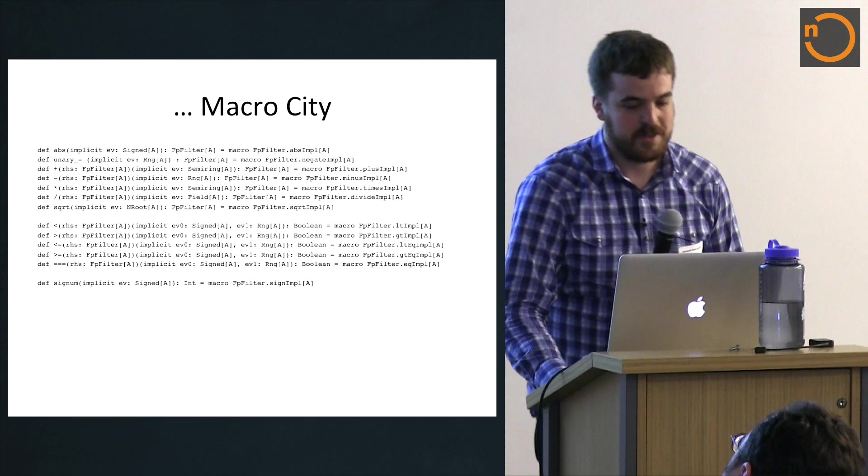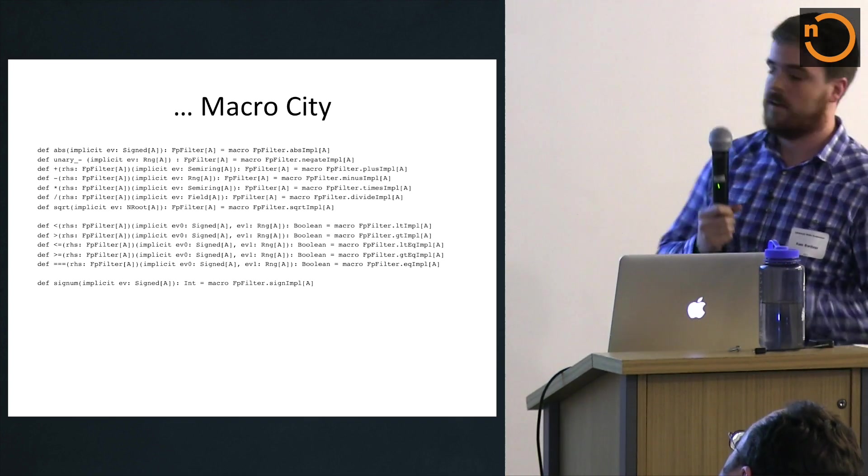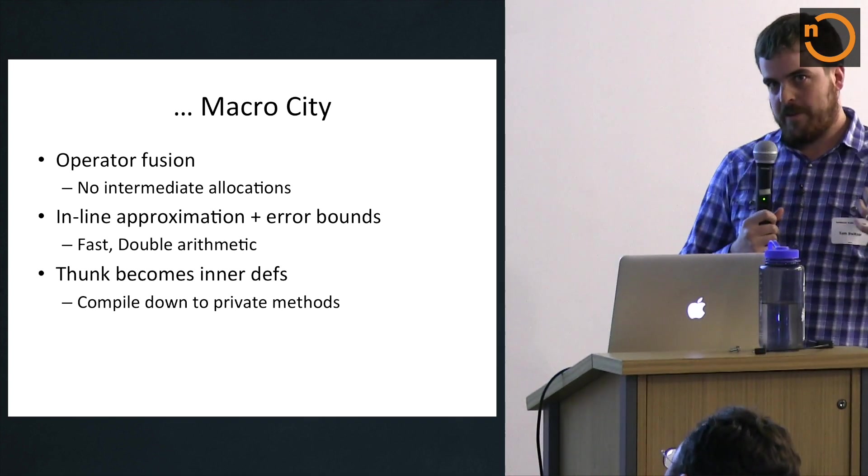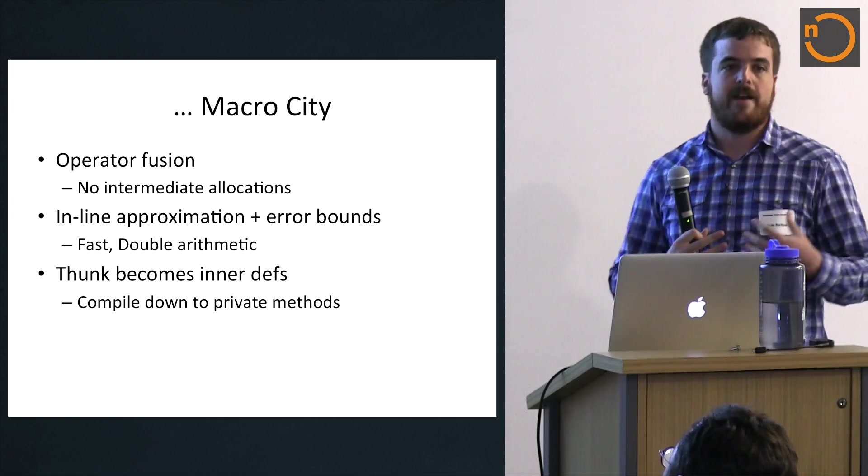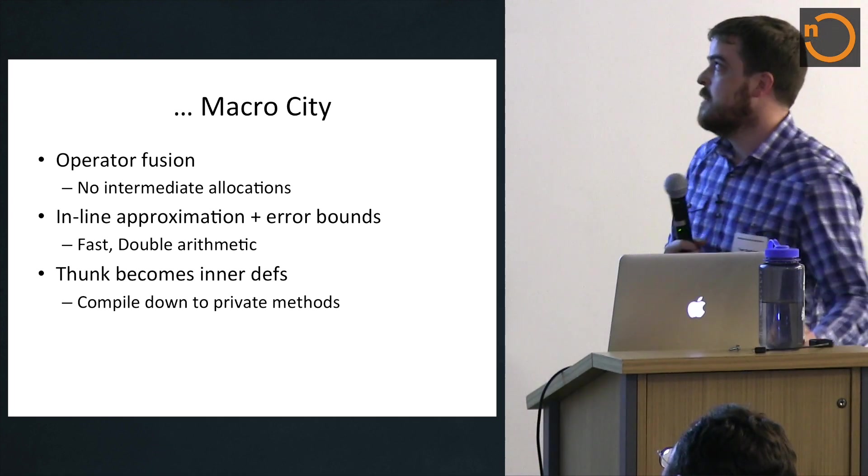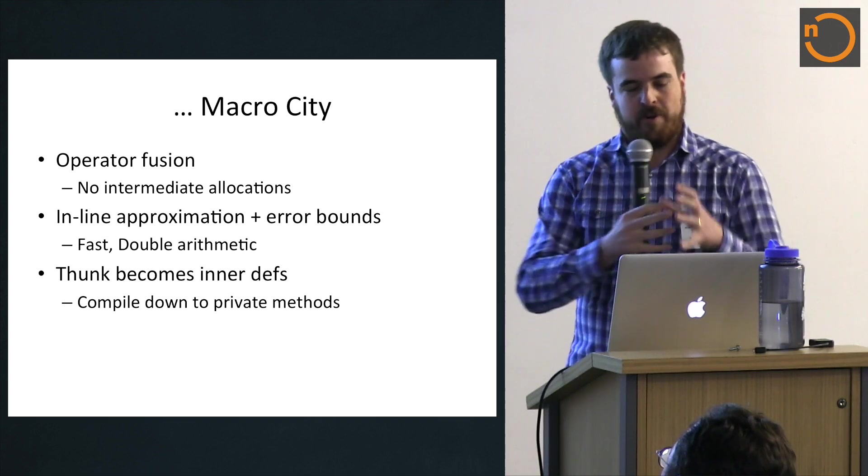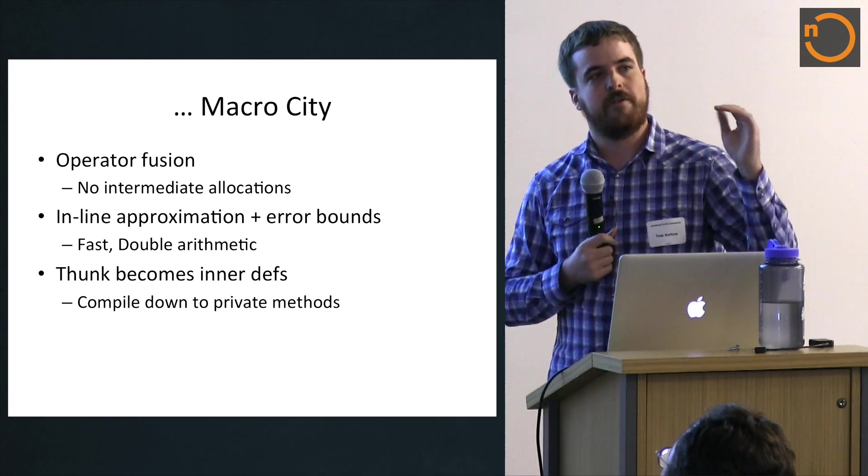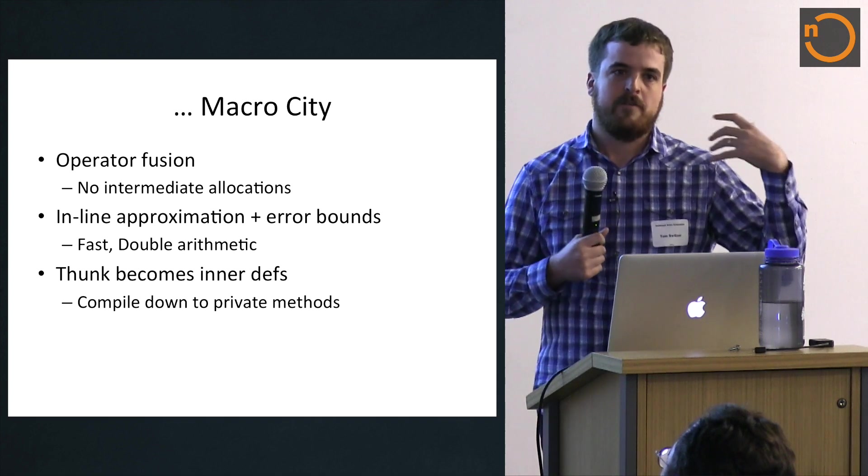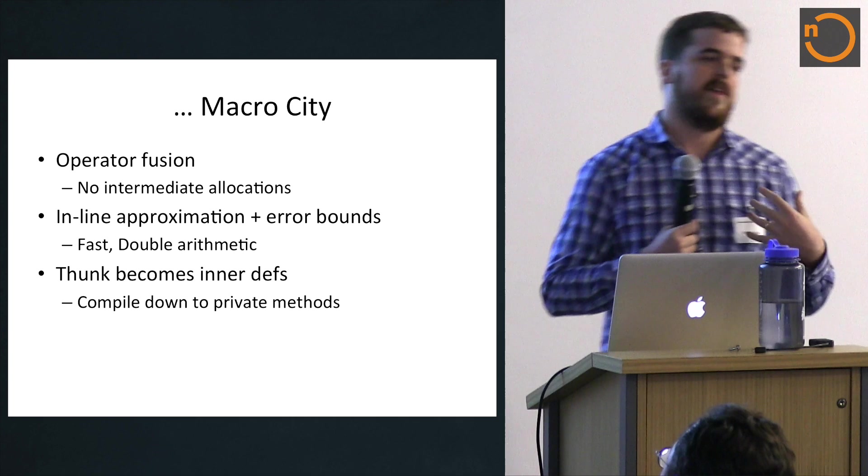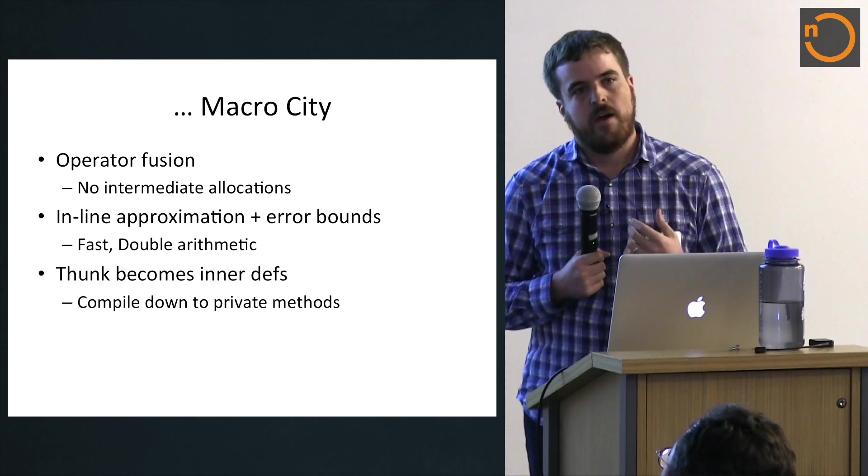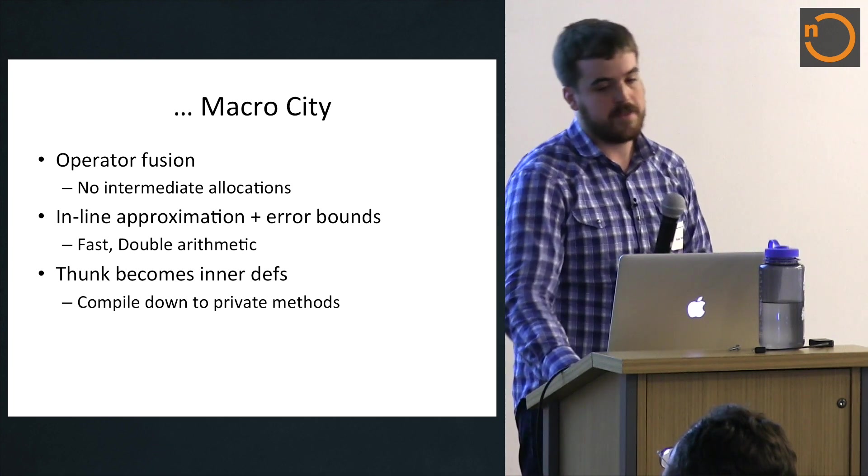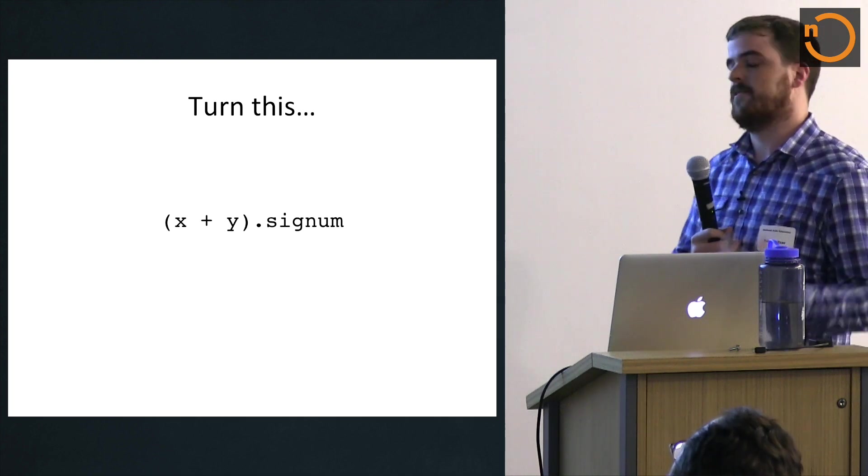So obviously the real magic happens in the implementation, which is just a ton of macros. And these macros are very important for a good reason, which is that we want to be relatively close to the speed of doubles. And we can't do that if we have a whole bunch of allocations for every single operation. So what floating point filter does is it, for a given expression, it'll try to fuse all the operators together to get rid of intermediate allocations. And it'll take all the error bound maintenance calculations, the floating point approximations and everything else, and it inlines them, and all that thunk you saw that evaluates the exact number type, it just gets turned into a def. And why it's important is that defs just get turned into private methods, so we're never actually allocating a thunk, instead we're just eventually calling some private method.